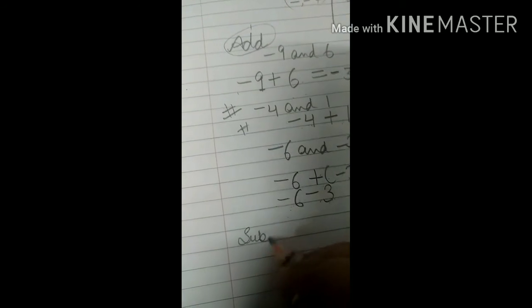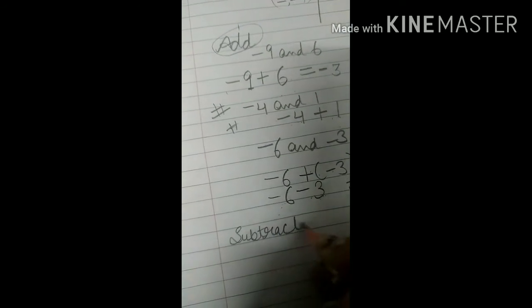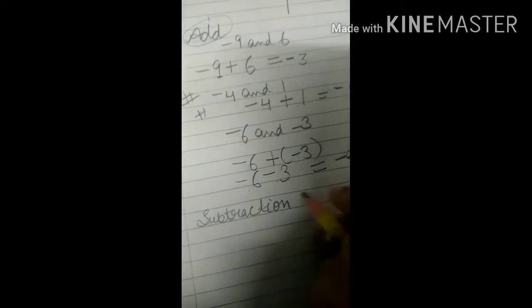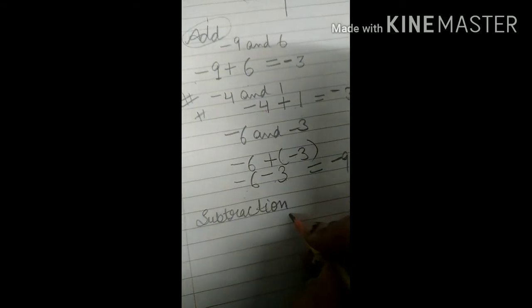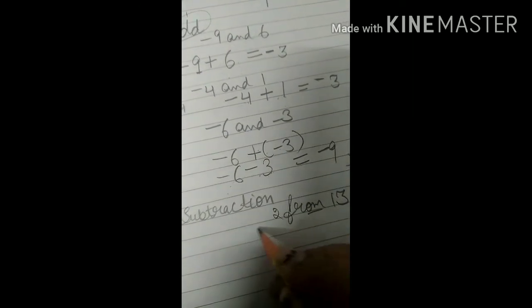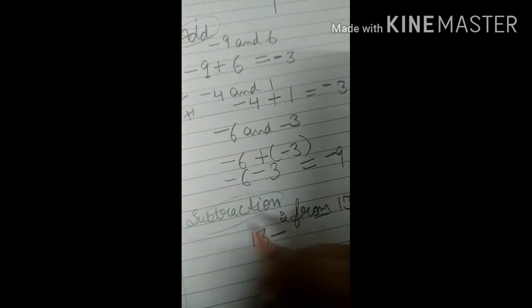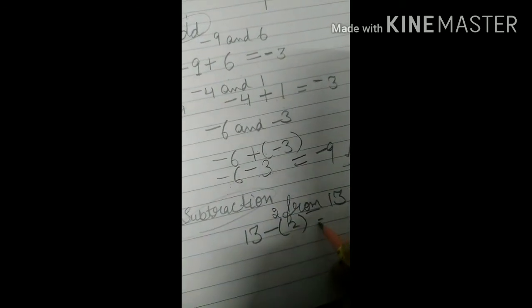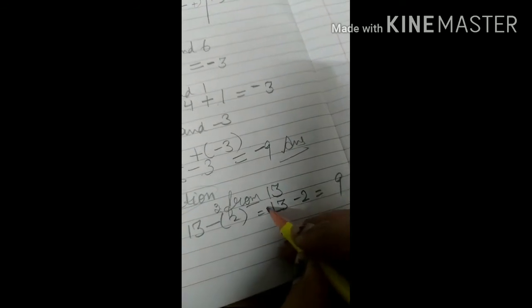Here we have examples related to subtraction. You have to subtract 2 from 13 — the last number goes to the front, and subtraction means minus, so we write 13 minus 2. That is plus minus, so the sign comes from the bigger number. Bigger number is 13, and in front of 13 there is plus, so the answer is plus 11.